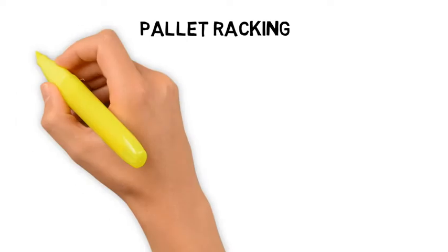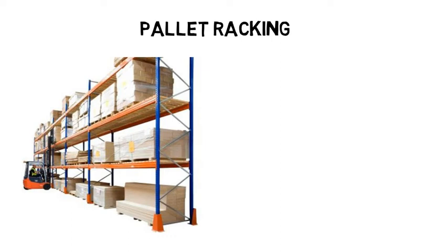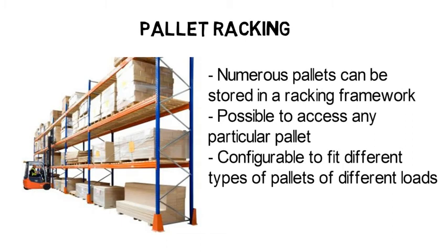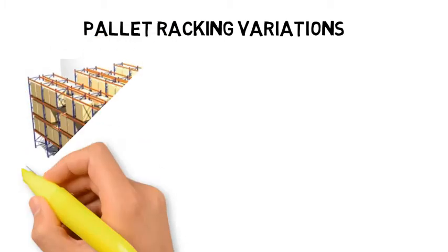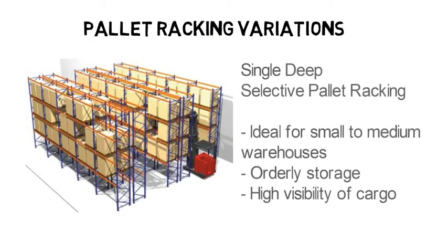Pallet racking is a relatively cheap and efficient manual storage system that is very commonly used. Numerous pallets can be stored in a racking framework. It is possible to access any particular pallet using the appropriate MHE, and the pallet racking is configurable to fit different types of pallets of different loads. The most basic type of pallet racking is single deep selective pallet racking. It is ideal for small to medium warehouses as it is an orderly storage system which provides high visibility of all cargo.